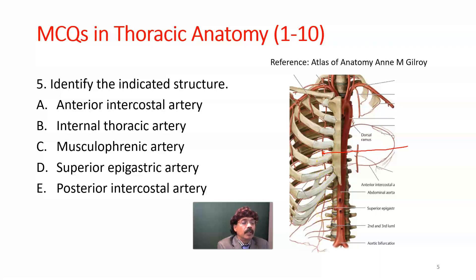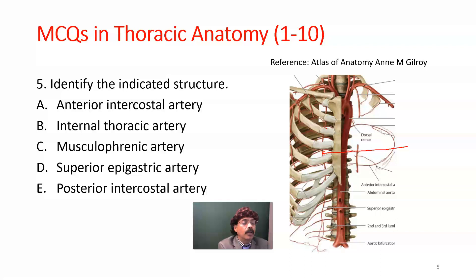The internal thoracic artery has a lot of clinical importance, especially in coronary artery bypass grafting (CABG). This artery is most commonly used to bypass a blocked coronary blood vessel. Other vessels like the great saphenous vein and radial artery are also used in CABG, but the internal thoracic artery is the most commonly used.